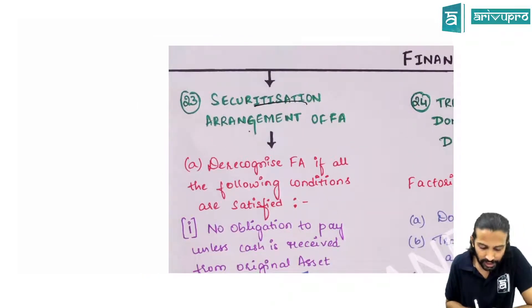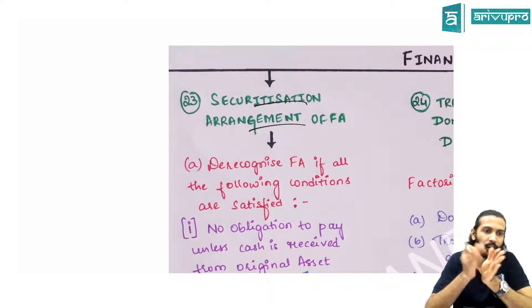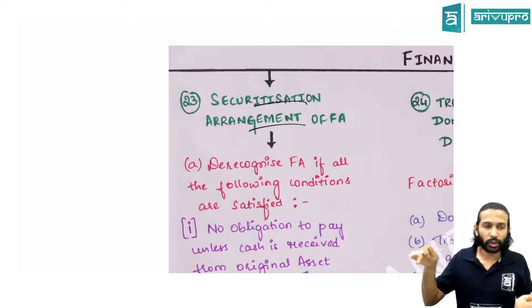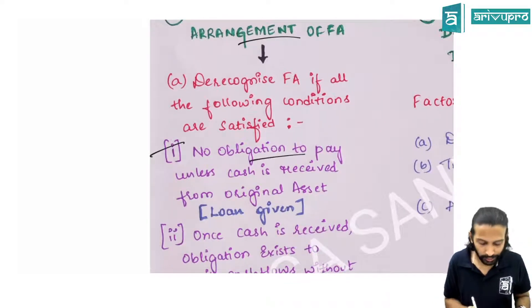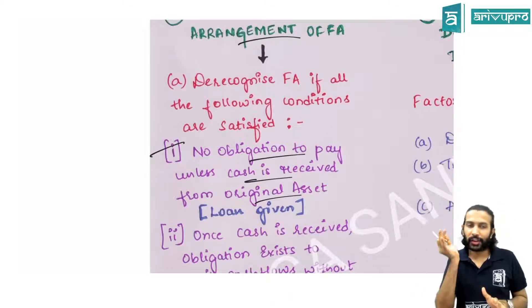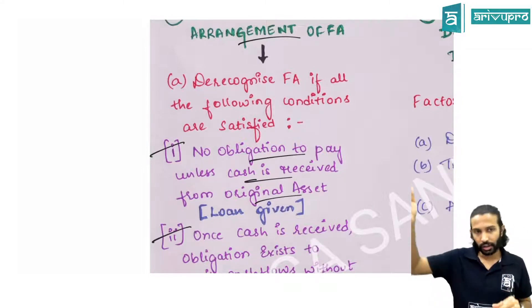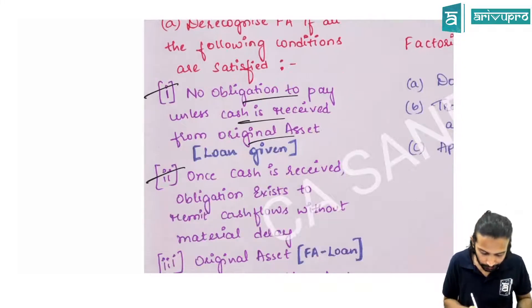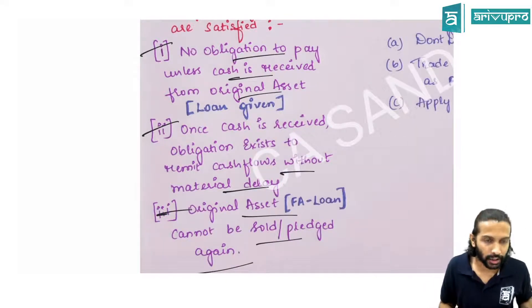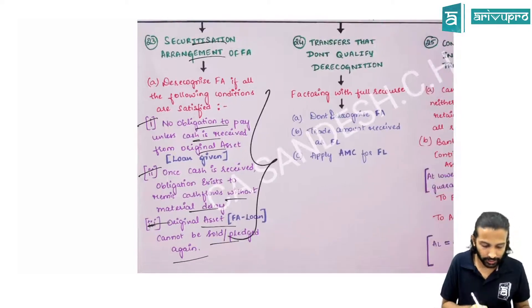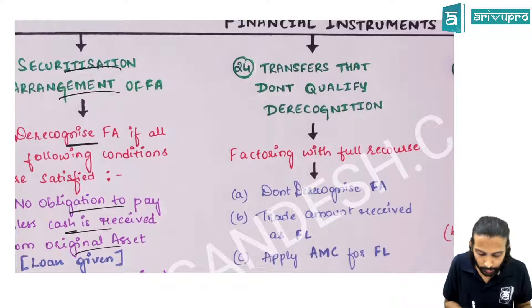Securitization: the originator transfers assets to an SPV, which converts them into smaller units and sells to investors. Derecognition of the financial asset is possible if three conditions are met: (1) no obligation to pay investors unless the originator recovers the EMI from the original loan; (2) amounts received from the borrower must be passed to investors without material delay; (3) the asset cannot be pledged or sold again.